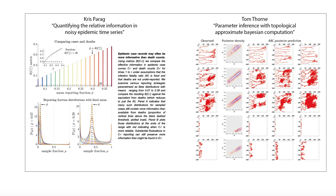To give you a couple of teasers, I've included two figures from the graphical abstract for Chris Parag and Tom Thorne. Chris Parag's talk is going to be about quantifying the relative information in noisy epidemic time series, and Tom Thorne is going to be talking about parameter inference with topological approximate Bayesian computation.